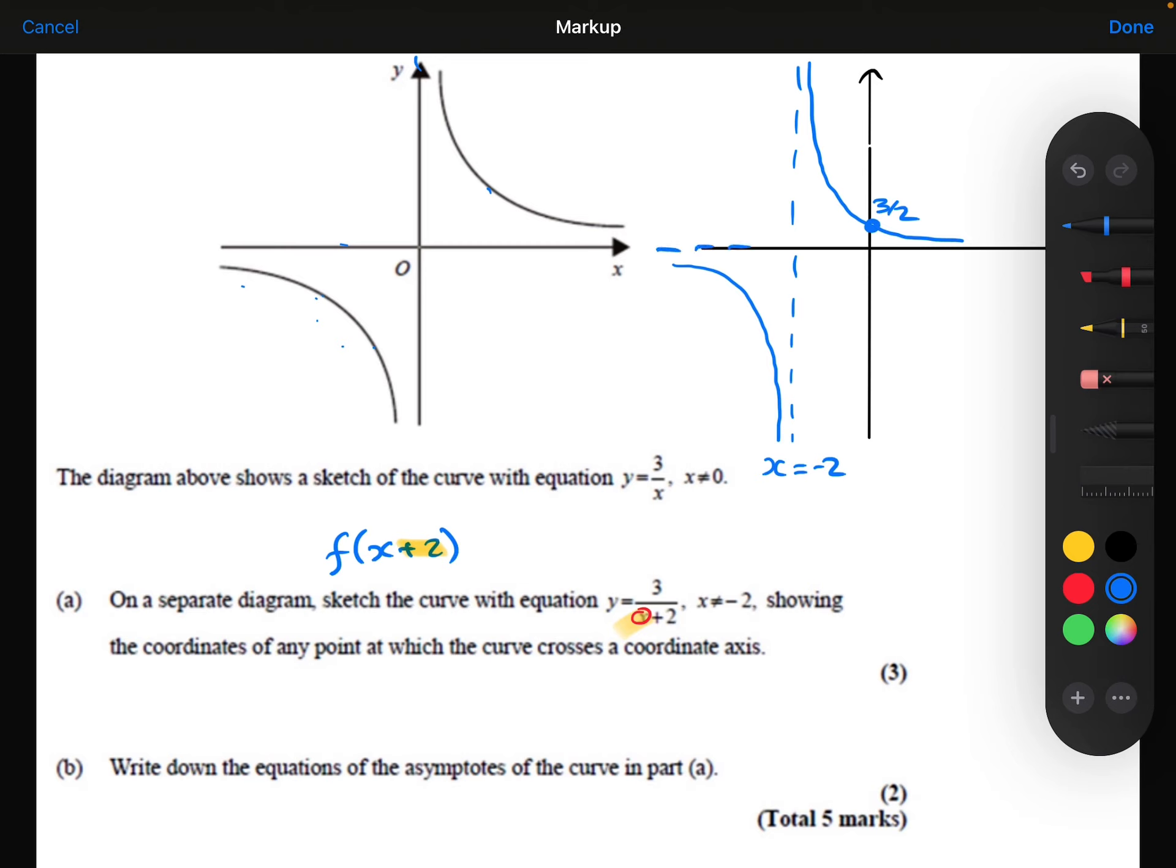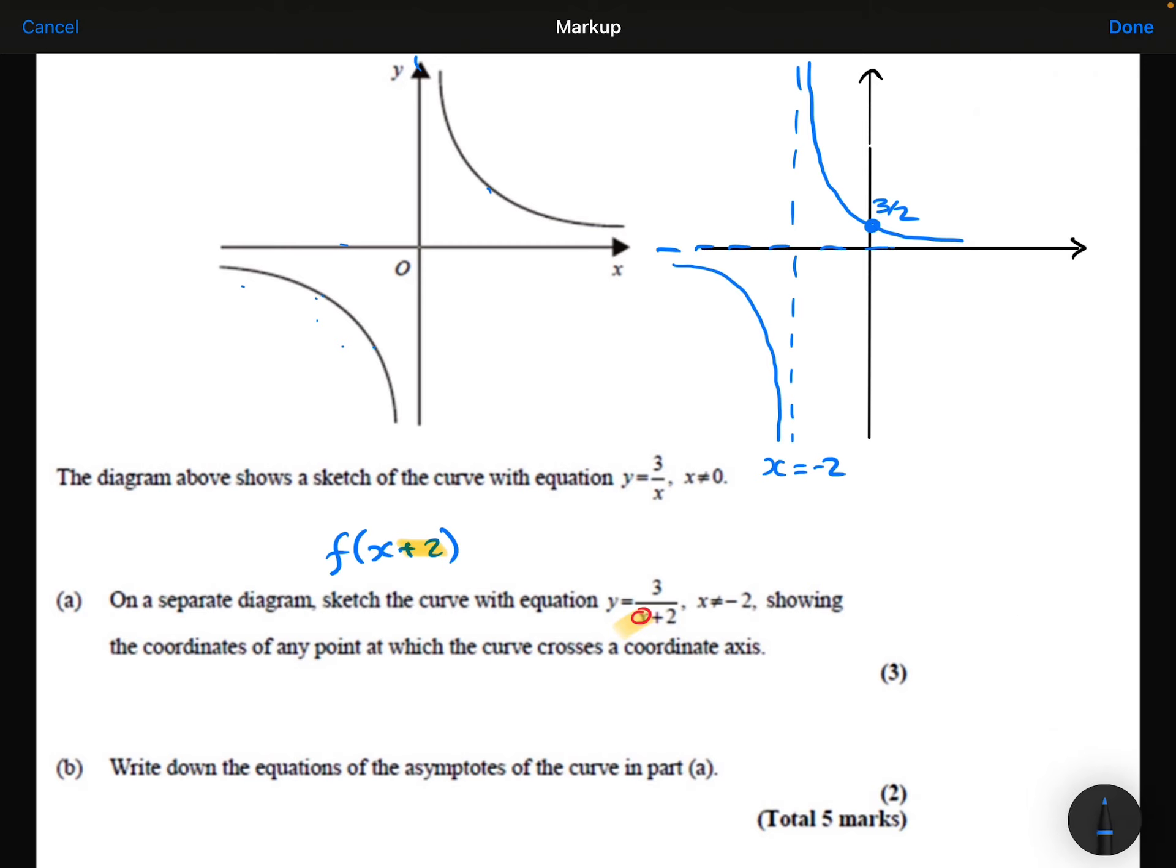But the horizontal asymptote will stay as it is. That wasn't affected by the move in the x direction. And that's got the equation y equals 0.